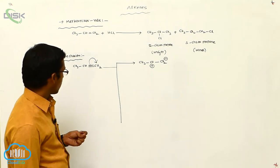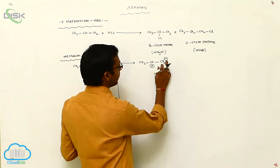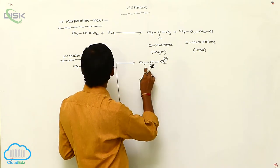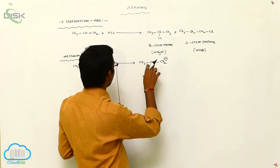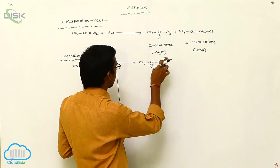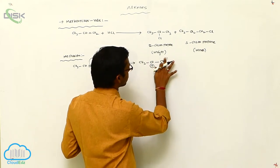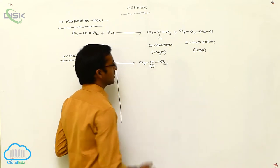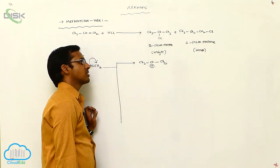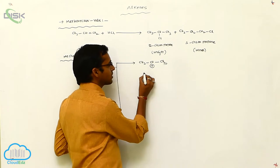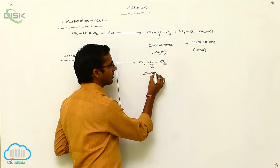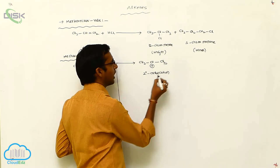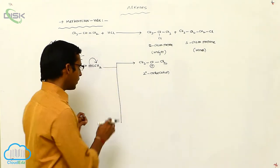So from the first cleavage, CH3CH+ is formed with a positive charge. When abstracting one proton, it is converted to CH3CH+CH3 — this is your secondary carbocation. A secondary carbocation is formed.